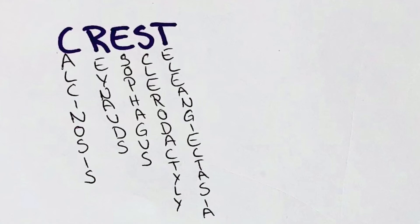E stands for esophageal hypomobility, one of the GI symptoms, which leads to reflux and dysphagia. S stands for sclerodactyly, which literally means sclerosed fingers — this presents with thick and hardened skin of the fingers and hands, which limits mobility. T, the last letter, stands for telangiectasia, a specific rash caused by dilation of capillaries, which is often observed in the face.